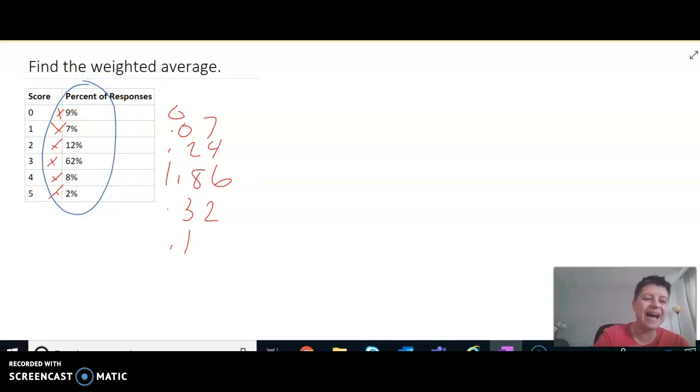And then five times 2%. One thing that I probably should note you, and you might've noticed this, I changed all of these to decimals before I multiplied. So 7% is 0.07, 12% is 0.12. It's important to do that. Now, if I add all of these together to get my weighted average, I end up with a 2.59.